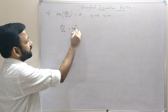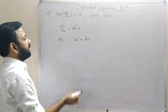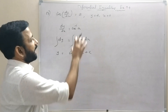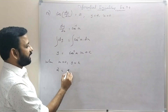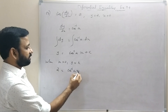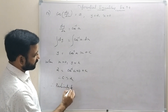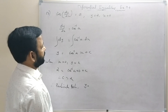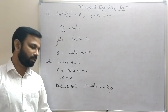Substituting x = 0, y = 2: 2 = cos⁻¹(a) · 0 + c, so c = 2. The particular solution is y = cos⁻¹(a) · x + 2.